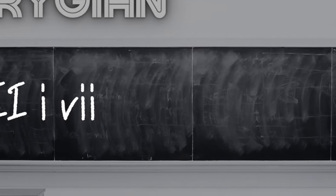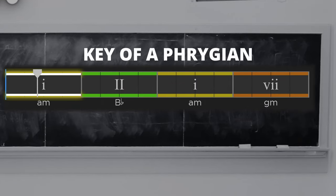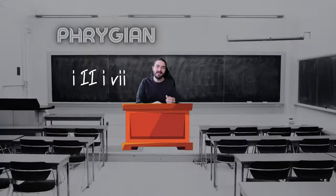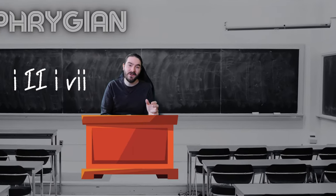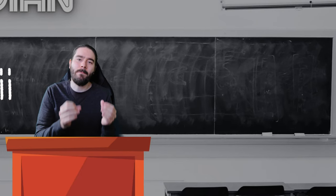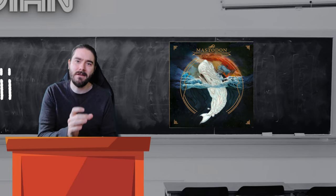The first Phrygian progression we'll examine is 1-2-1-7. This progression will anchor you squarely in Phrygian. It drives home the dark sound of the mode. A fantastic example of the power of this progression can be found in the crushing Blood and Thunder by Mastodon.